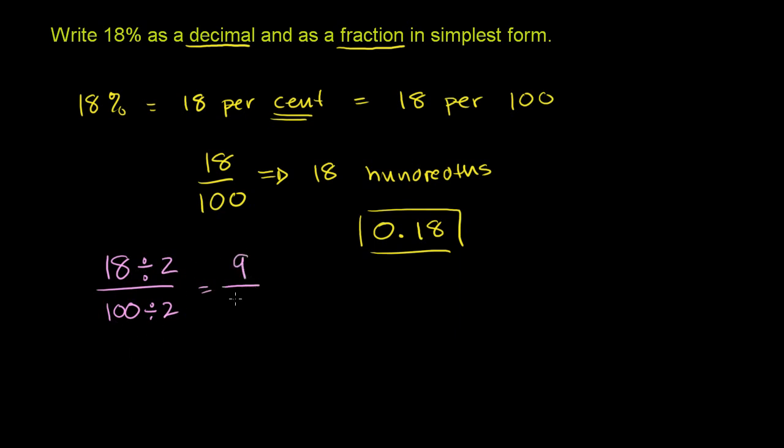100 divided by 2 is 50. And I don't think these guys share any common factors. 50 is not divisible by 3. 9 is only divisible by 3 and 1 and 9. So this is the fraction in simplest form.